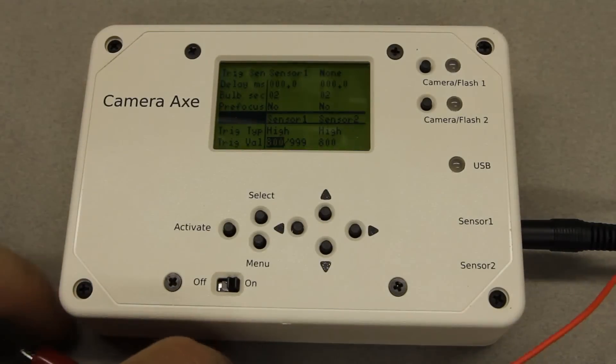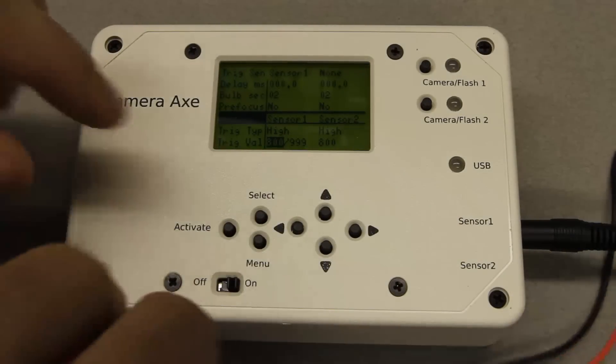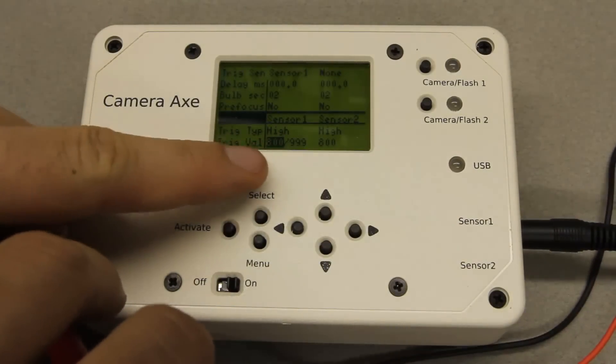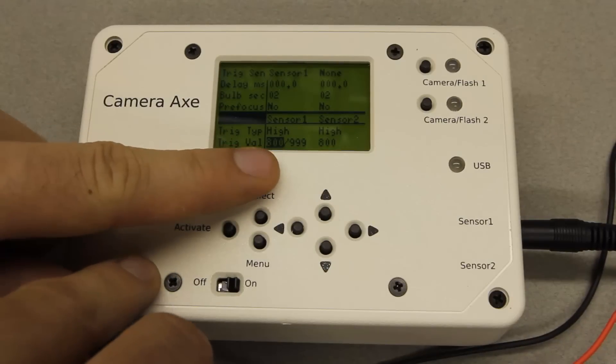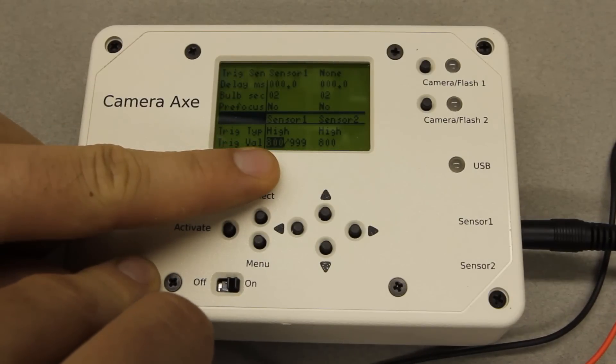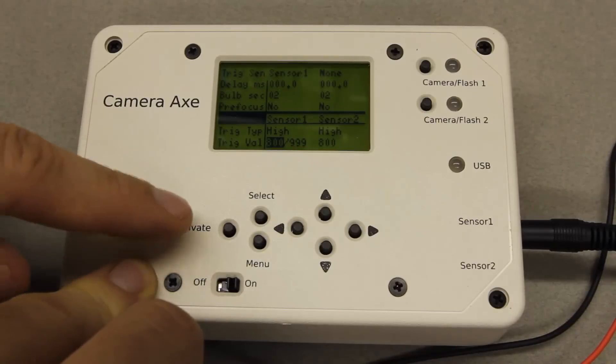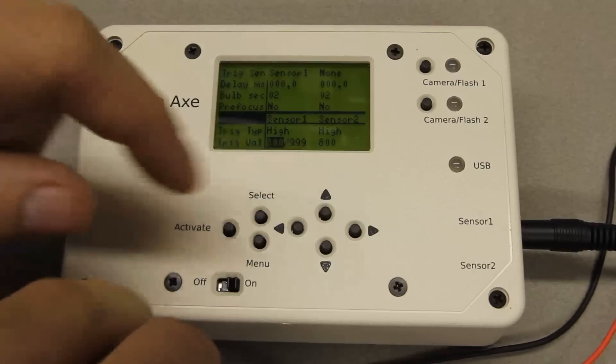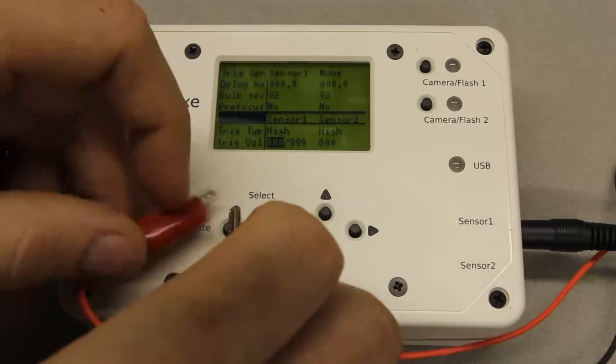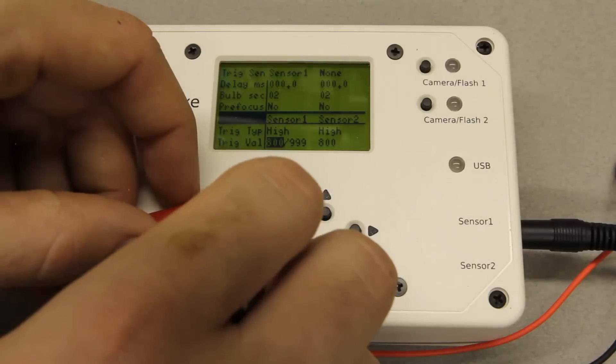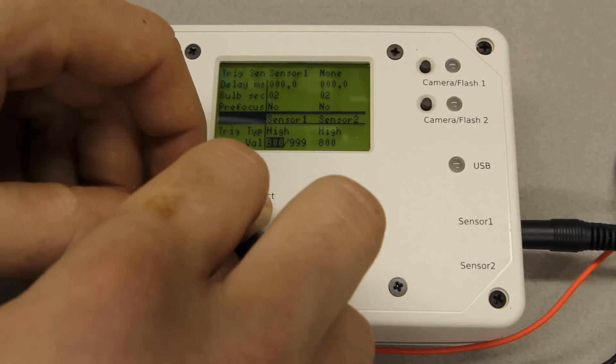The interesting bit is down here where we have the trigger value. The first one is the value that's going to be the threshold where the trigger happens, and the second one is the current value being read. When we have an open circuit like this, it's 999. When I touch these contacts together, it drops down to near zero.